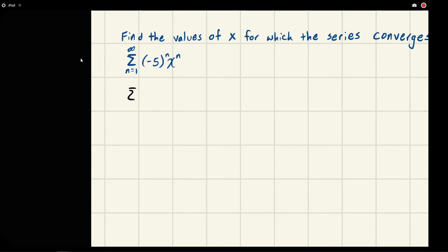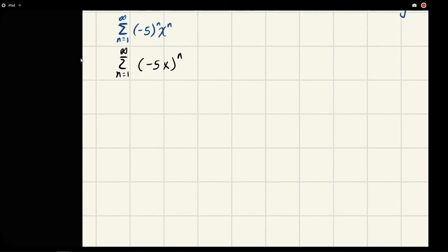If we go ahead and rewrite this as sum from n equal one to infinity, we can say it like (-5x)^n. It's a little easier to see. From here we say, well this would form the common ratio r, whatever is in here raised to the n. And we know that r has to be less than one or greater than negative one. The magnitude has to be less than one.